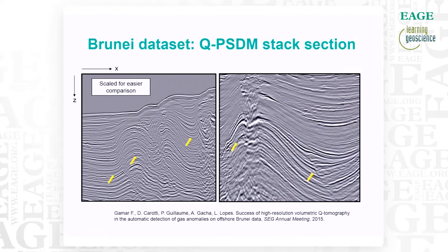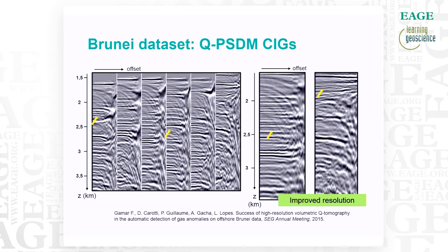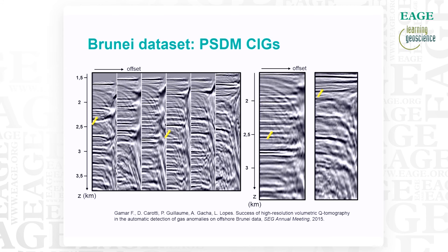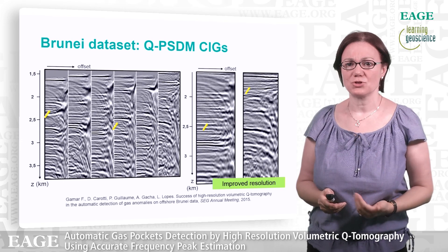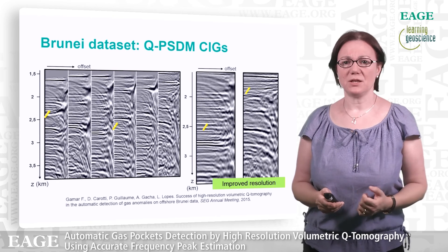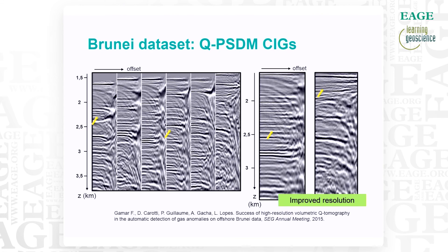Events become more visible and some events appear. Looking in the pre-stack domain, here we have the PSDM CIGs and then the Q-PSDM CIGs. On the Q-PSDM CIGs, the increased resolution is effective for all offsets. Many events are now visible after Q-PSDM, which will allow easier RMO picking, for example, for a new velocity update.